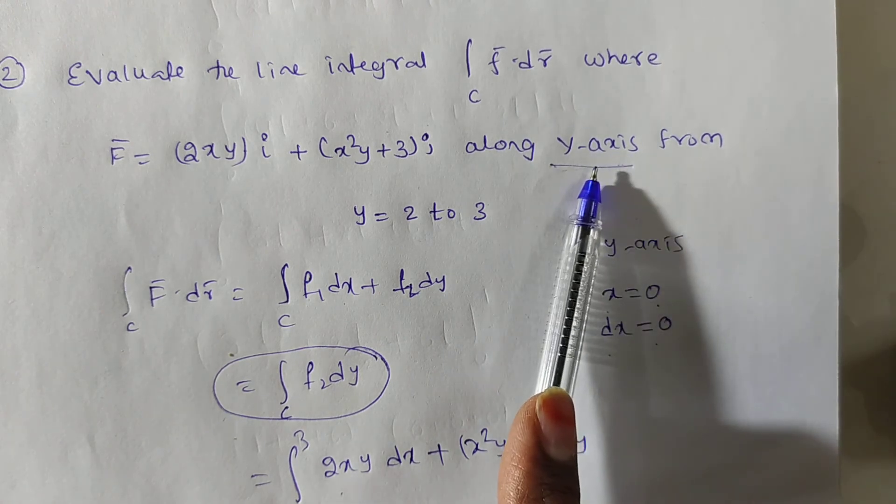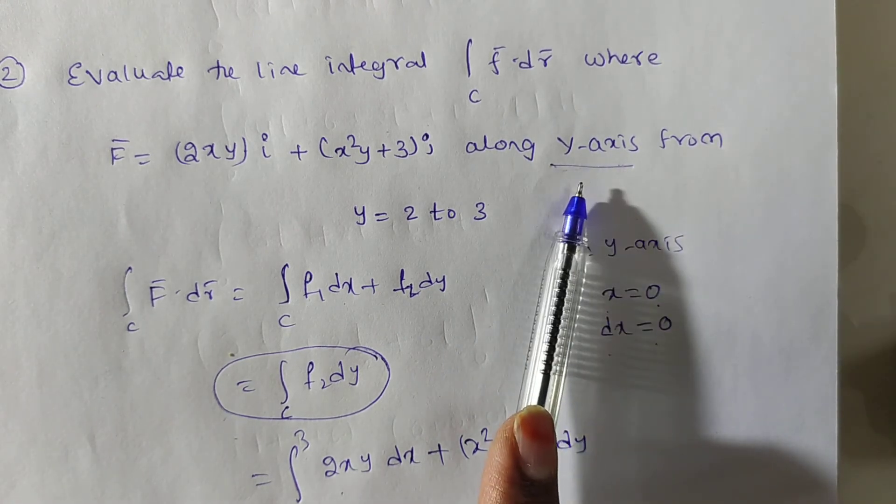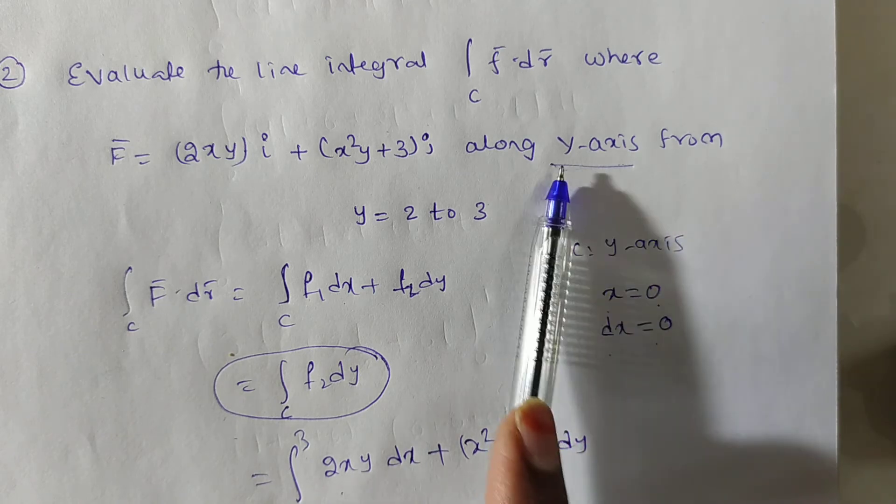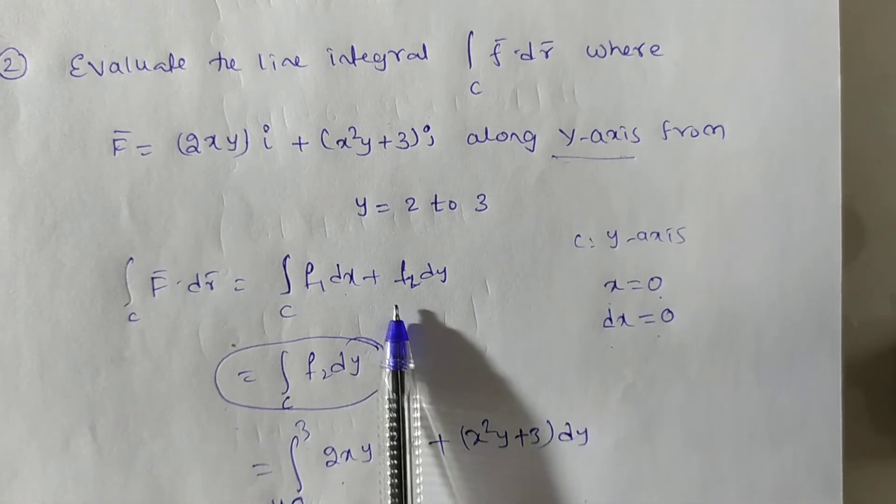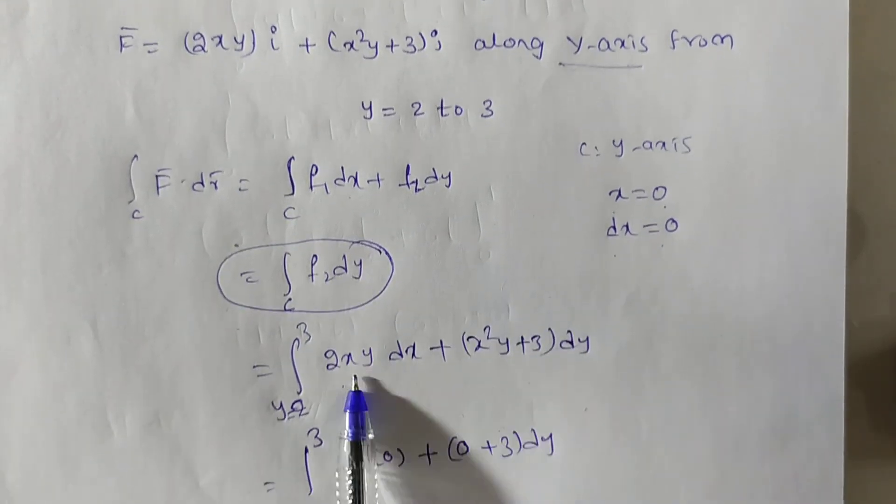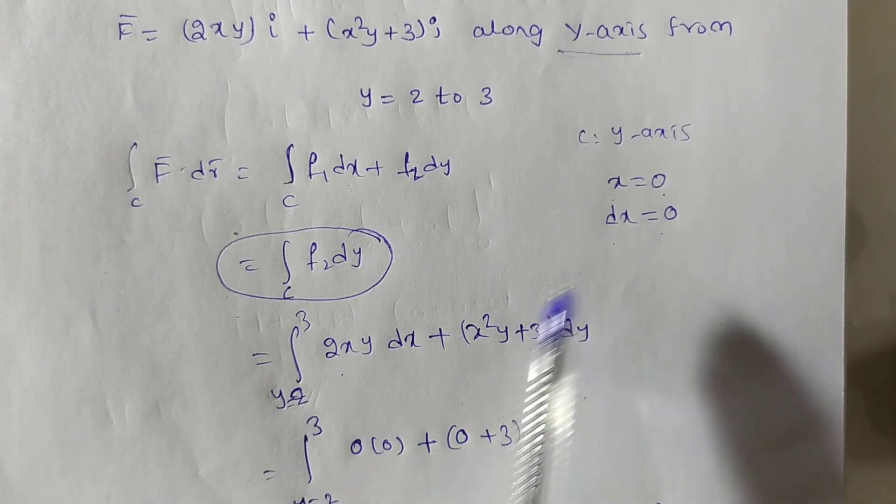Along the y-axis means x value 0. If z is there, z is also 0, dz is also 0. Now f1 dx plus f2 dy I have to write. Here x is 0. We have to substitute f1 dx in place of x is 0, and dx also 0.